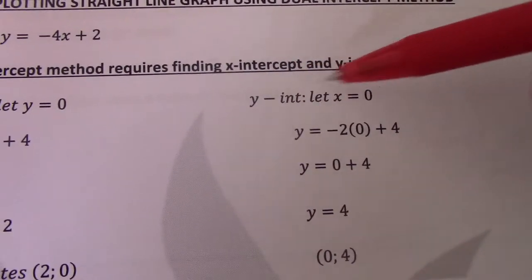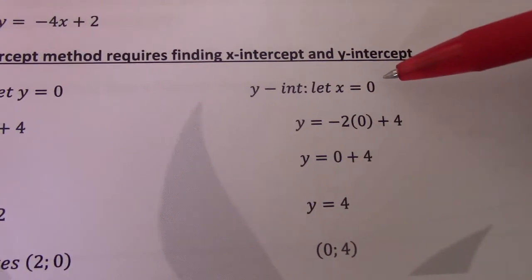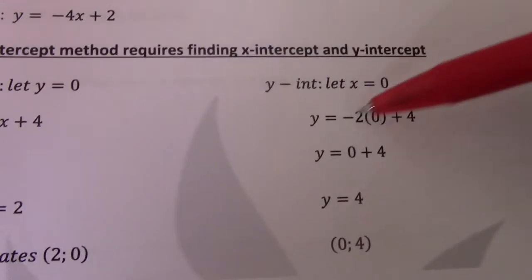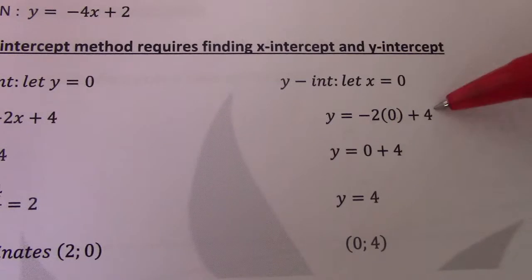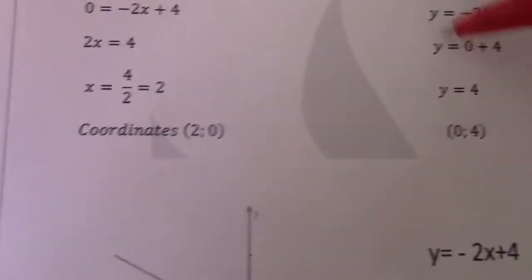On this side, y intercept, let x equal to 0. So there instead of writing x, I write 0, 2 times 0 is 0, plus 4 gives me 4. So there my coordinate is 0 and 4, and 2 and 0.